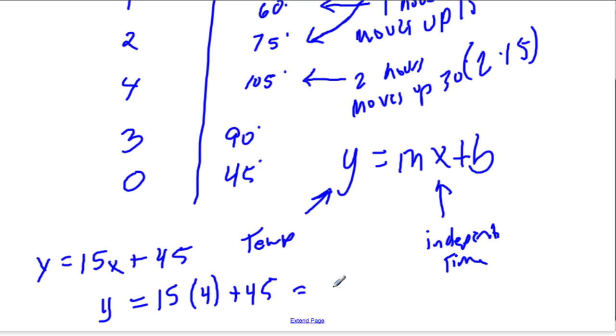15 times 4 is 60, plus 45, and that's 105. So that's our temperature. That's correct after 4 hours. And we could use this equation to predict for any temperature.